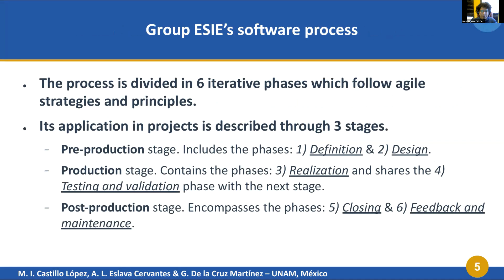The group SEA process is divided into six phases that occur iteratively according to agile strategies and principles. Its application in projects can be distributed through three stages. We start with the pre-production stage, which includes the definition and design phases. Next we have the production stage, which contains the process realization phase and shares the testing and validation phase with the post-production stage.